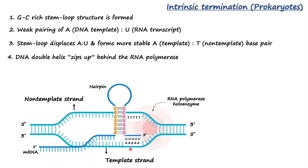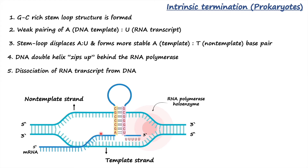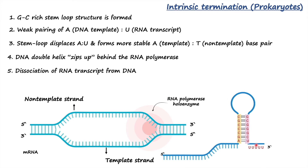This stable base pairing between adenine and thymine results in the zipping up of the two DNA strands — in other words, it leads to the closing of the transcription bubble. As the two DNA strands zip up, that results in the dissociation of the mRNA transcript from the DNA template strand, eventually leading to the termination of transcription in prokaryotes.